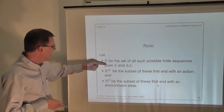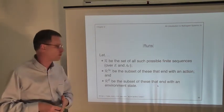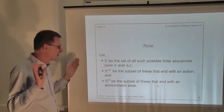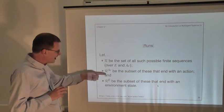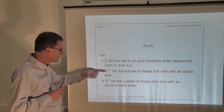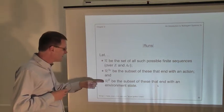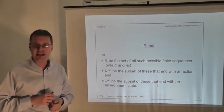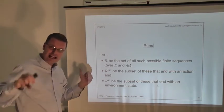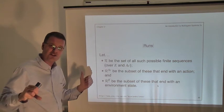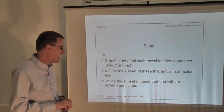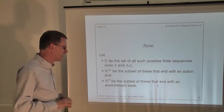We use calligraphic R to denote the set of all possible runs over some set of environment states and actions. We also use notation to distinguish runs that end with an action — R superscript AC — and runs that end with an environment state — R superscript E.